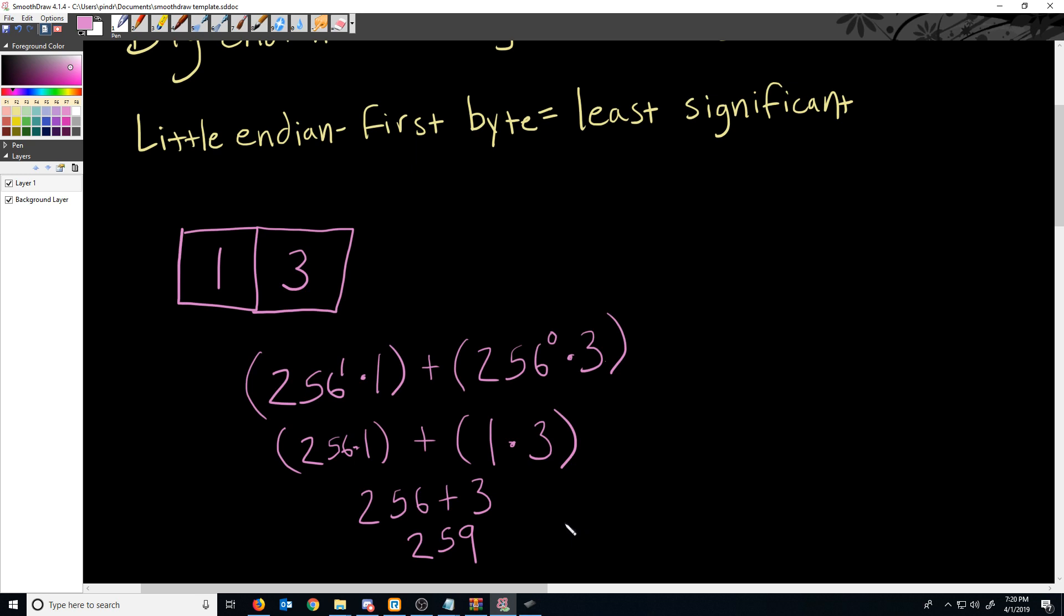Now we're going to take a look at one more example, but this time it will be for a four byte integer. So let's add in two more blocks for our memory, since this is four bytes. And it's still Big Endian, so the most significant byte is the first one, and the least significant is the last one.